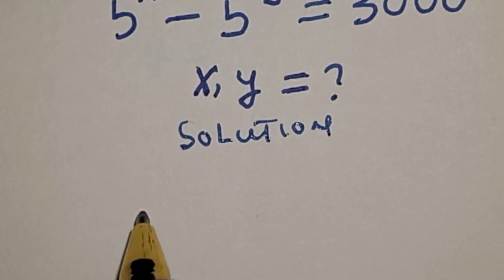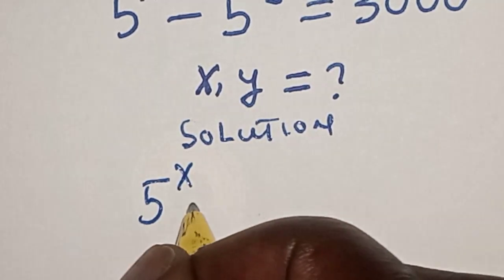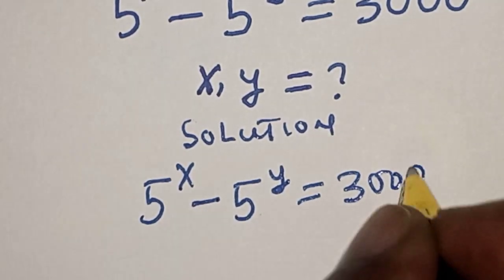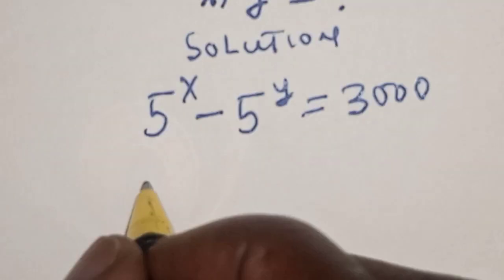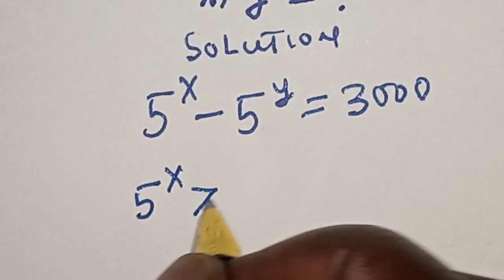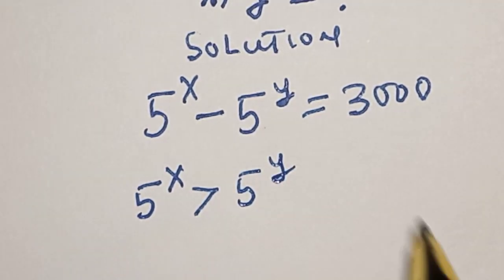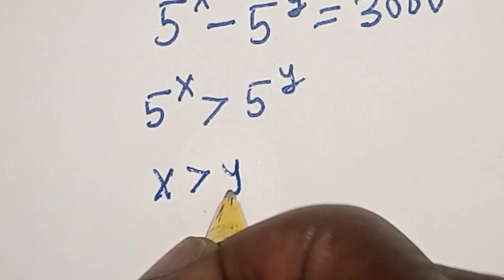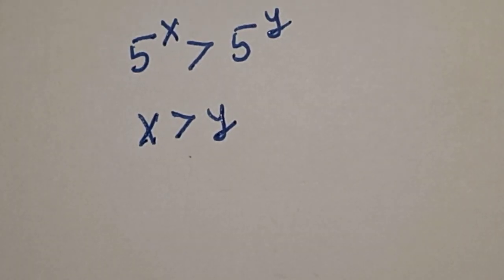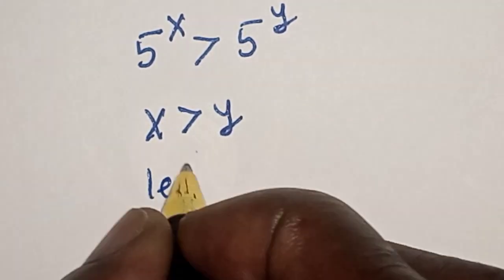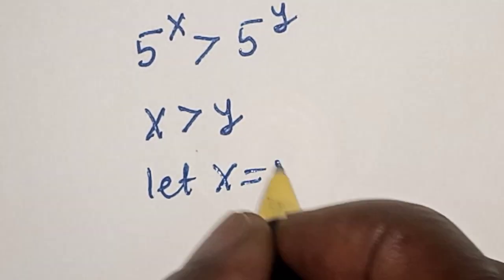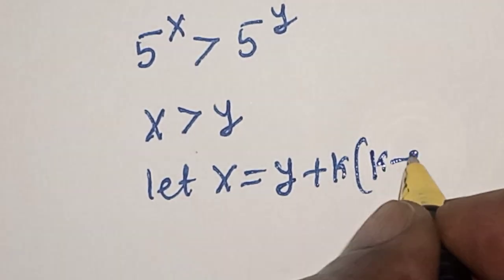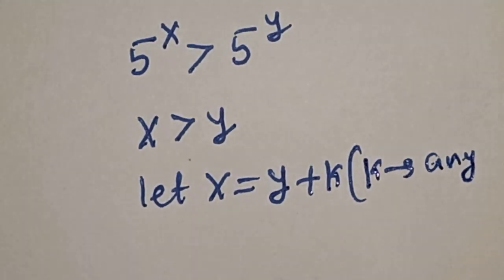We have the given equation: 5 raised to power x minus 5 raised to power y is equal to 3000. Take note that 5 raised to power x is greater than 5 raised to power y, therefore x is greater than y. Since x and y are positive integers, let x equal y plus k, where k is any positive integer.